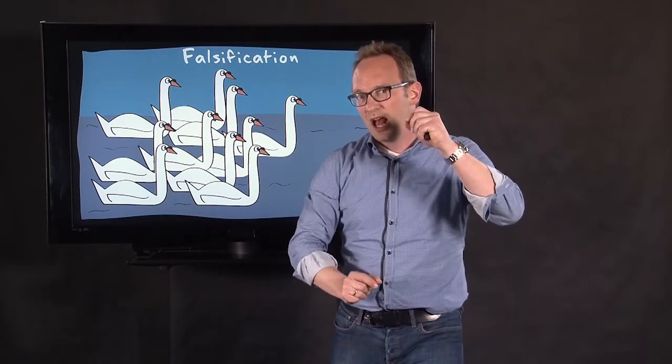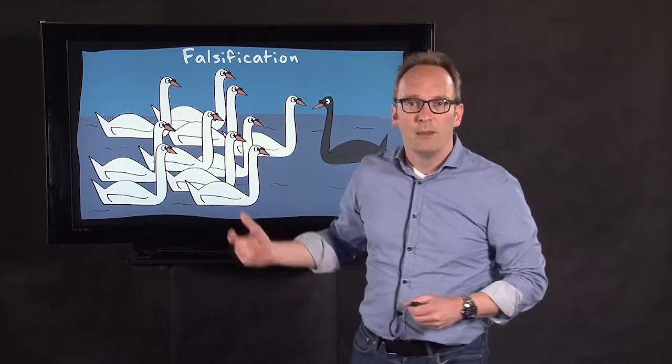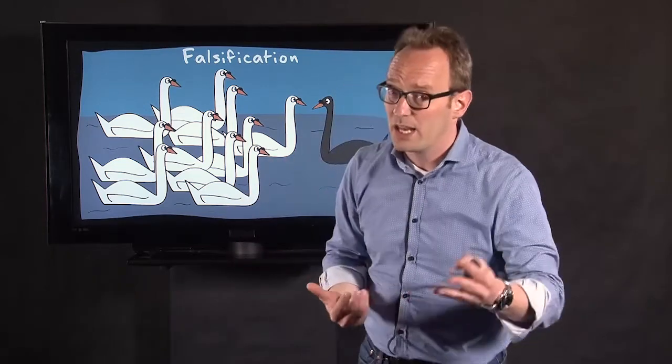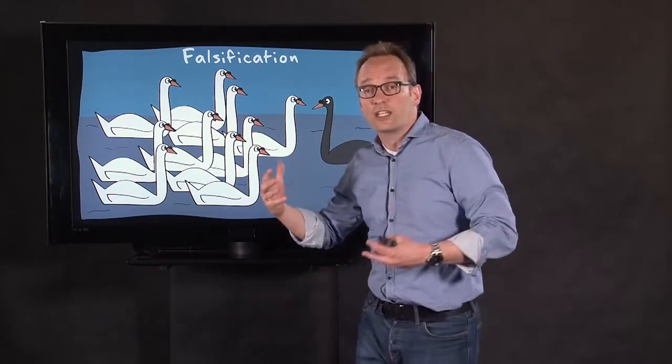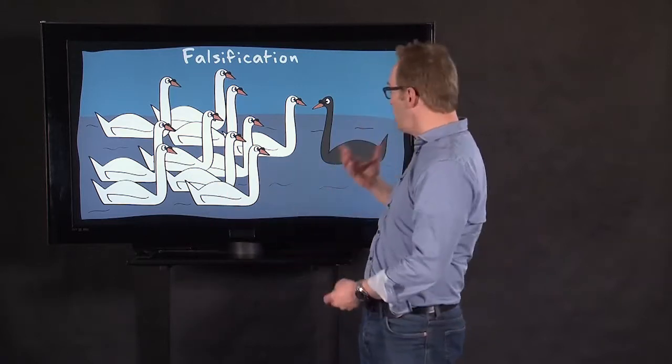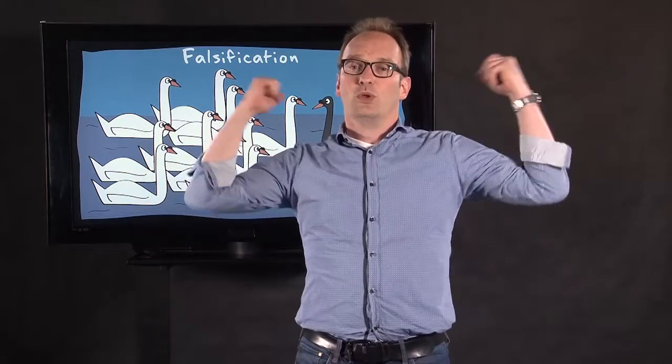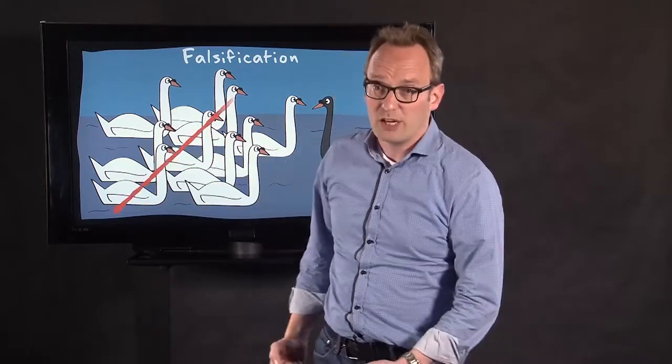And then falsification is not looking the other way when a black swan moves in. Because, in falsification, the idea of Popper and others was that, in science, you try to test a theory. So, you say, all swans are white. And as soon as a black swan swims in, we would ring the bells of victory. Because our theory is refuted. This is just one dimension of epistemology.